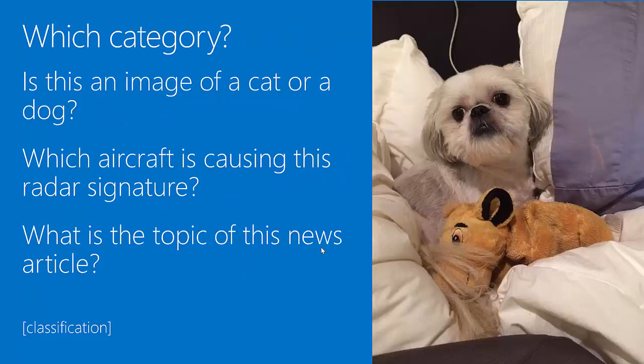The second category of questions answers: which category? If you want to know whether something is true or false, yes or no, A or B — is this an image of a cat or a dog — a classification algorithm will help you do this. It can decide between two classes or between many classes. You can imagine an aircraft detection algorithm that takes radar signatures and assigns them to one of many known types of aircraft. There is a popular set of algorithms that do this as well.